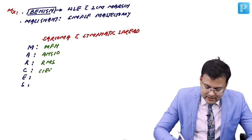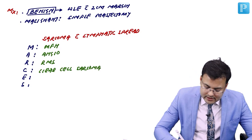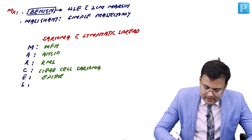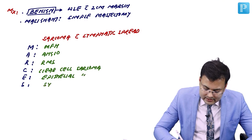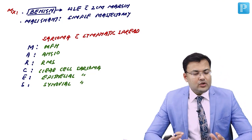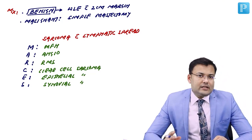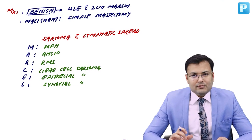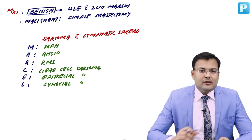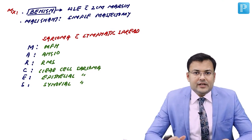Continuing the MARCES mnemonic: C = Clear cell sarcoma, E = Epithelial sarcoma, S = Synovial sarcoma. In these six sarcomas there is lymphatic spread, so there is lymph node metastasis and we must perform lymph node dissection during surgery.